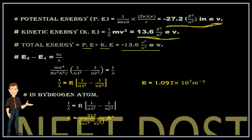They may ask for the ratio between potential energy, kinetic energy, and total energy. Simply remember: potential energy is −27.2 z²/n², kinetic energy is 13.6 z²/n², and total energy is −13.6 z²/n². Since 27.2 is double of 13.6, and potential energy and total energy are both negative while kinetic energy is positive, the ratio PE : KE : TE = −2 : 1 : −1.